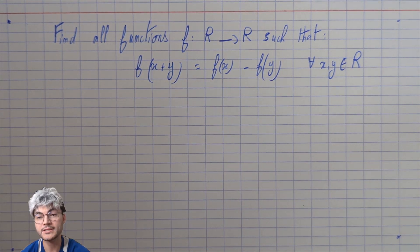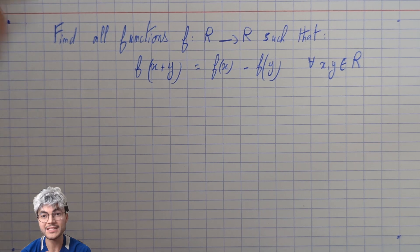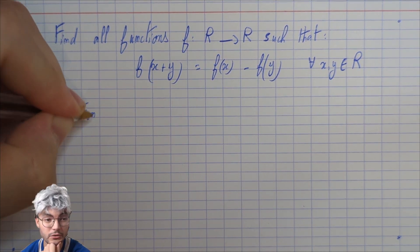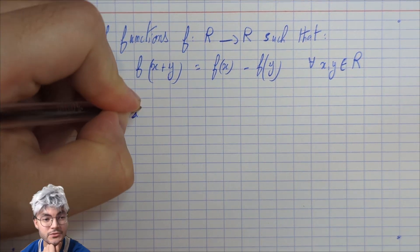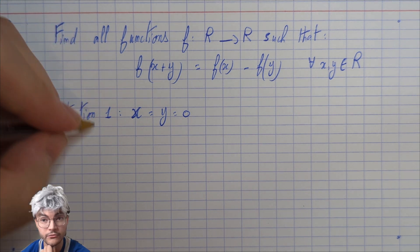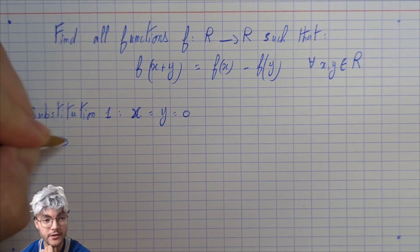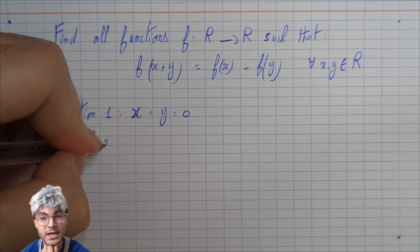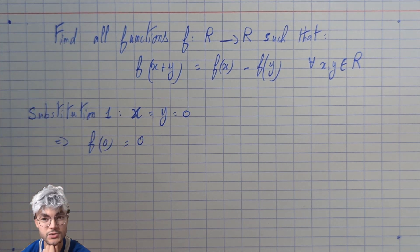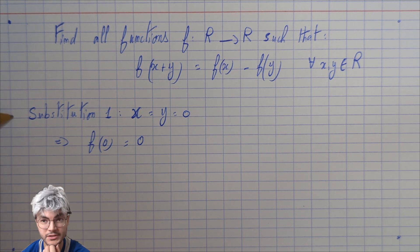I'm gonna start by looking for the most classical value of a function which is f of 0. So I'm gonna substitute x by 0 and y by 0 in my first equation. This gives us f of 0 equals f of 0 minus f of 0 which is 0. So f of 0 equals 0.